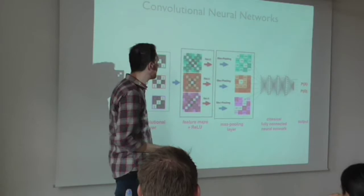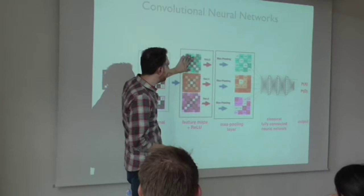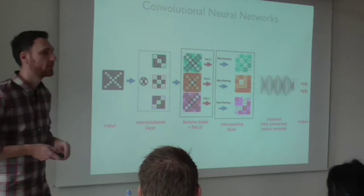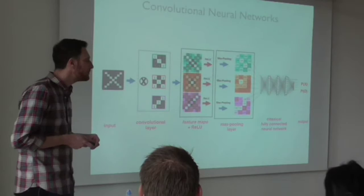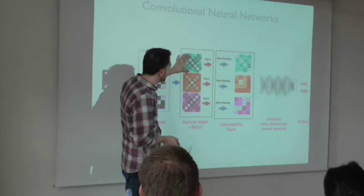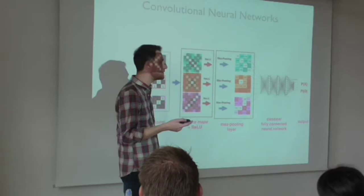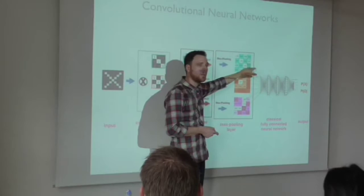Then you do max pooling and feed this to the net. One question is: why did we apply the activation function to the feature map and then lower the resolution? Why not first lower the resolution and then apply the activation function? When you lower the resolution, you lose information. In some cases, that's true — it's kind of like a hack. It doesn't have to be like this. If you look at how people actually implement this network, sometimes they do the activation after the max pooling.